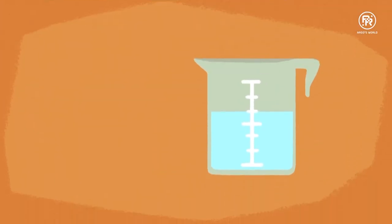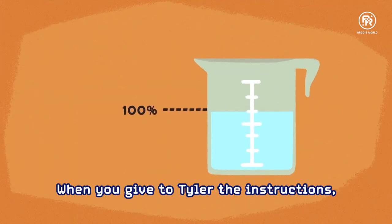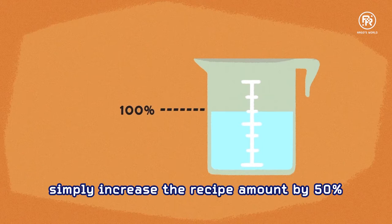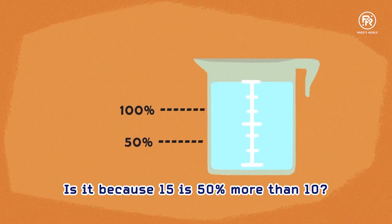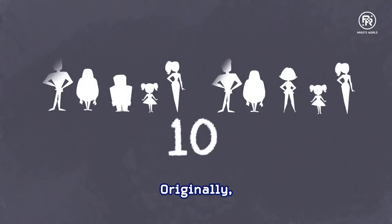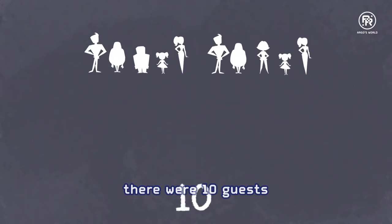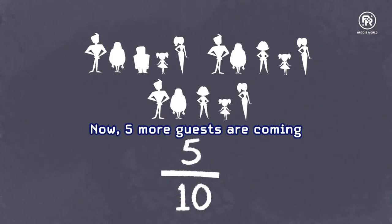It is simple, mon ami. When you give Tyler the instructions, simply increase the recipe amounts by 50%. Oh, because 15 is 50% more than 10. Originally, there were 10 guests.